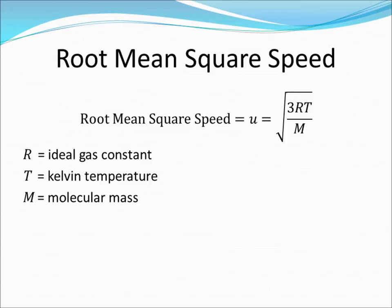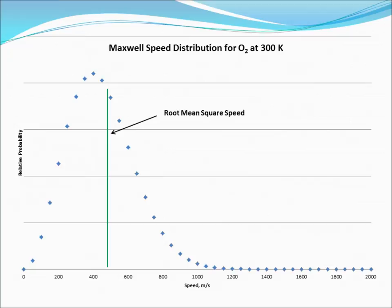The speed distribution for O2 at 300 Kelvin is shown here, along with the root mean square speed represented by the green line.